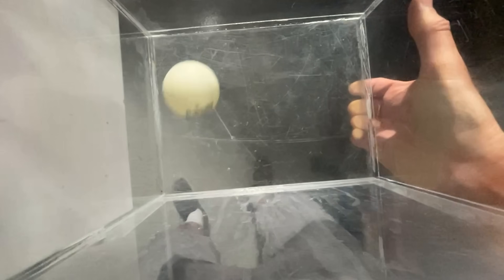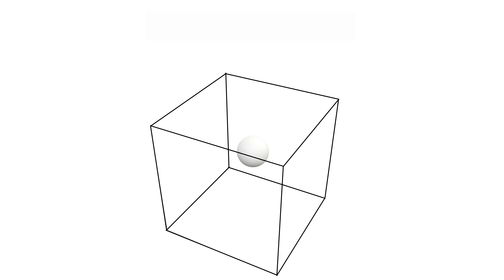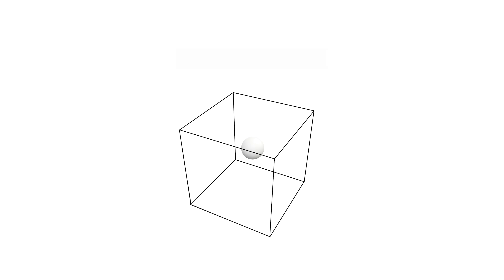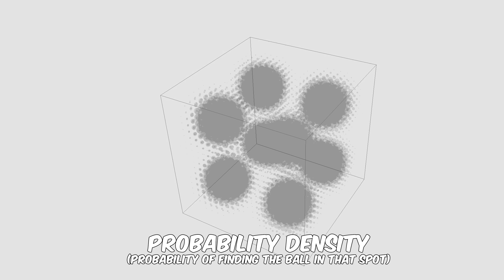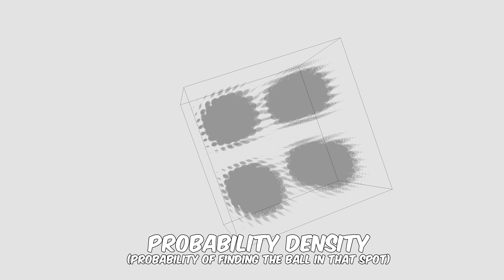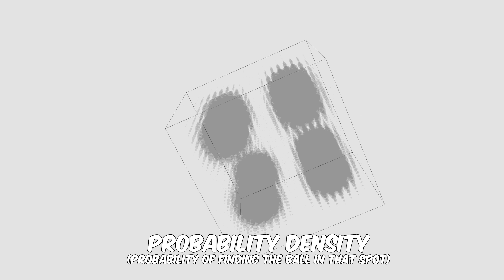But something weird happens when the particle in the box gets smaller. So if we were to shrink this ball and box down to only a few nanometers, then every time we try to check where the ball was, we would find that there are certain spots where we usually find it, and there are certain spots where we never find it. If I made a 3D graph about the probability of finding the particle in a certain spot in the box, it would look like this.